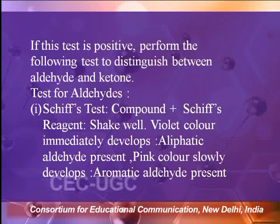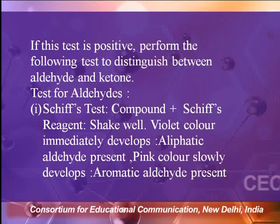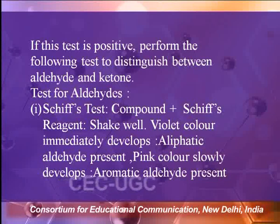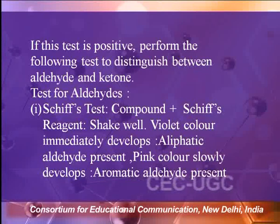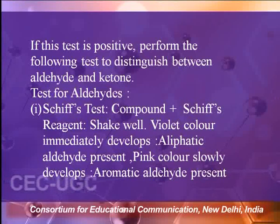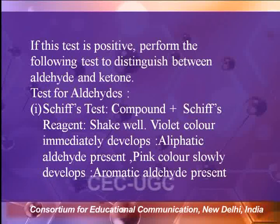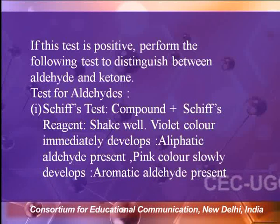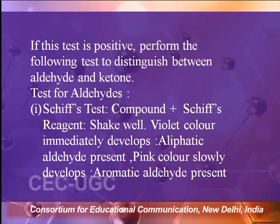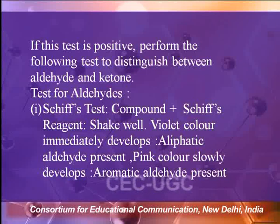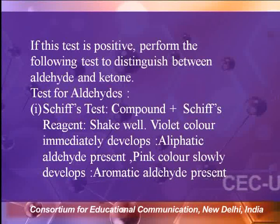The first test for aldehyde is the Schiff test — Schiff is the name of the scientist. Take the given organic compound in a test tube in a small amount, then add the Schiff reagent and shake it well. If a violet color immediately develops, the aldehyde may be aliphatic. The Schiff test is given only by the aldehyde functional group, not by the ketone. So if the Schiff test is positive, the given carbonyl compound is an aldehyde.